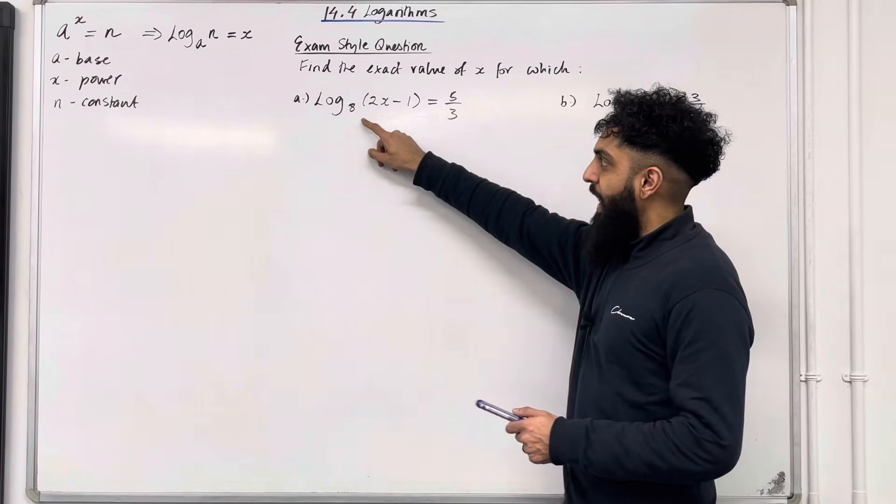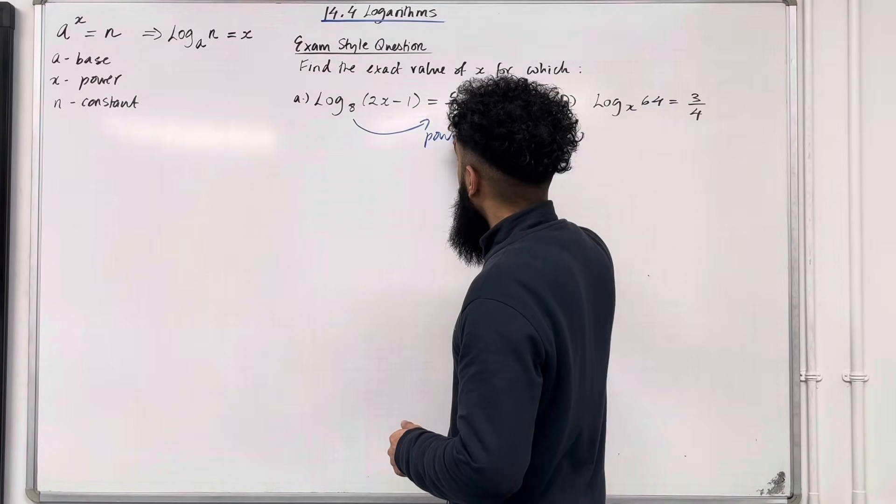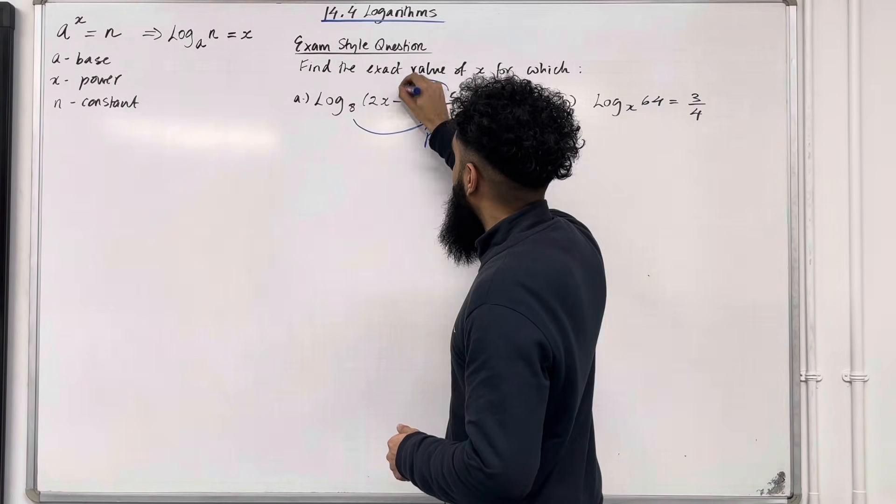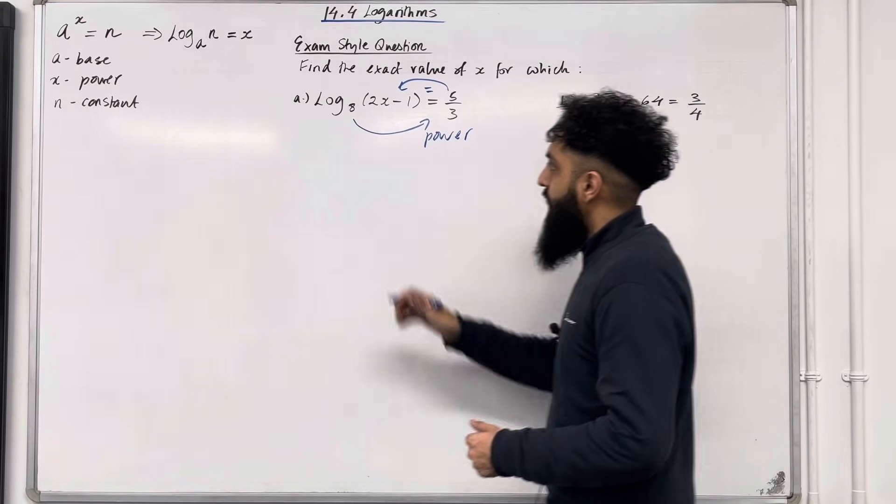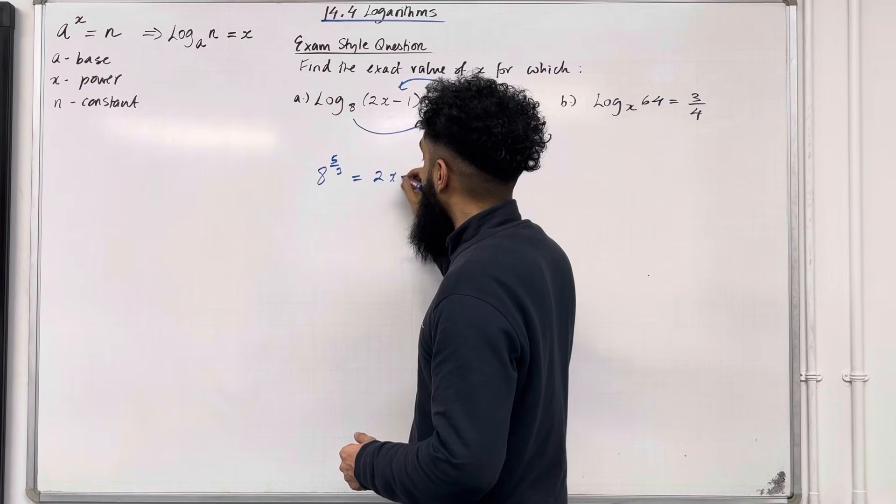The base of the logarithm is 8. So we can take 8 and raise it to the power 5 over 3, setting it equal to what we have inside the logarithm. So 8 to the power 5 over 3 is equal to 2x minus 1.